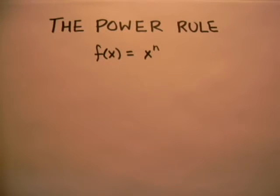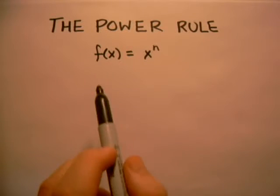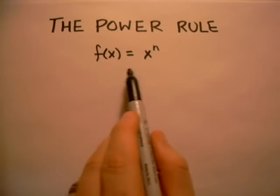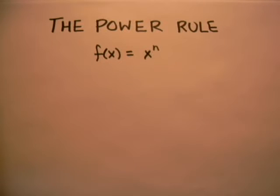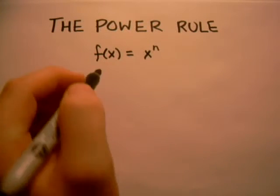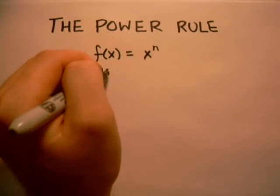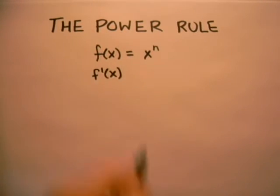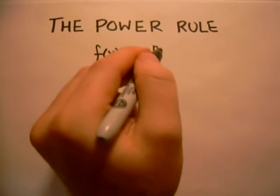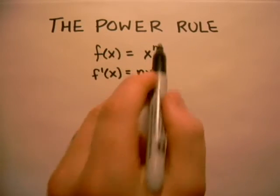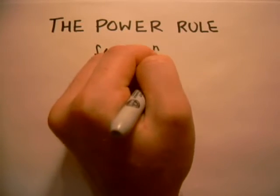This is a quick introduction to the power rule. The power rule says that if we have some function of x that looks like x to the n, where n is just some number, then all we have to do to get the derivative is to bring the n down in front of the x and then subtract one from the n in the exponent.